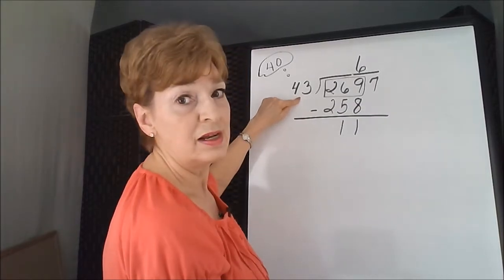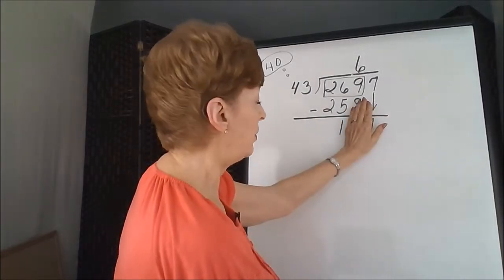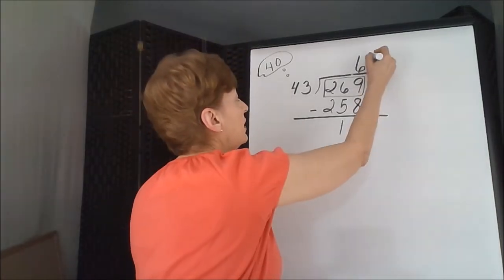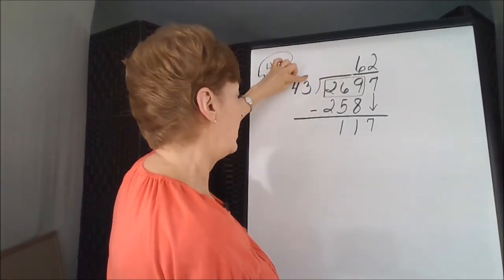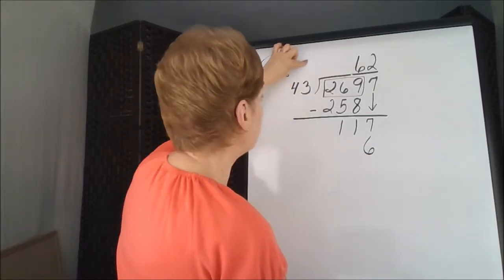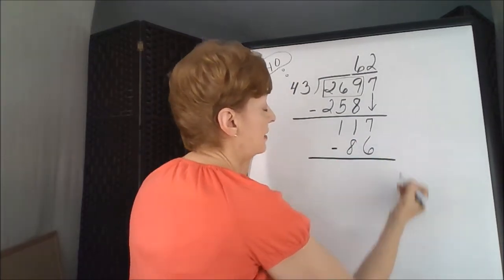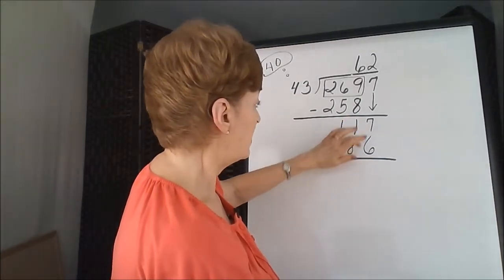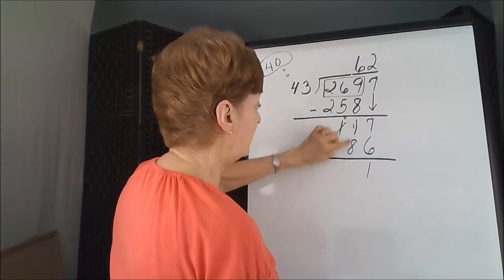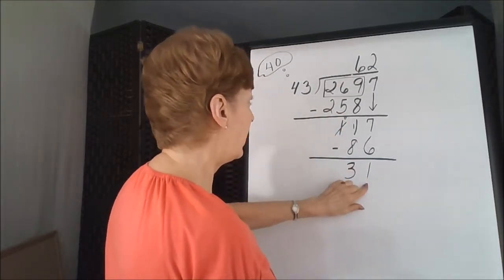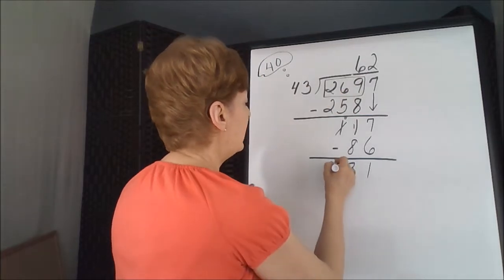11 is smaller than the 43, so that's our cue to proceed. We're going to bring down the 7. 4 goes into 1, no, into 11, yes, 2 times. 2 times 3, this is in the ones column, I'm multiplying sideways, is 6, and 2 times the 10s position is 8. I'm going to subtract because division is a quick way to subtract. 7 take away 6 is 1, and here is a borrowing situation, a regrouping, 11 minus 8 is 3. 31 is smaller than our divisor. There are no additional numbers left in the dividend, so we know that this is our remainder.